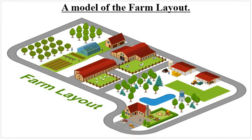Somebody may ask: what are some of the enterprises a farmer can have on the farm? We can have things like dairy farming, ranching — that's keeping animals for beef production — crop production or crop farming, vegetables, fruits, chicken or poultry, pig production, and sheep. Those are all enterprises a farmer can have on the farm.